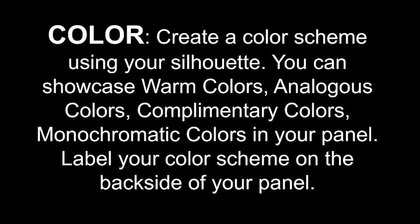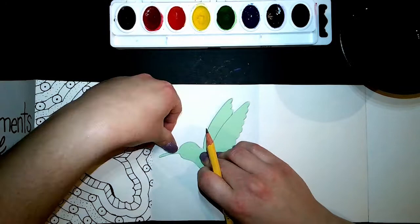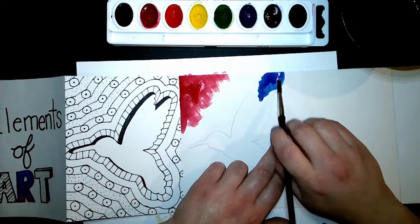The first thing you're going to do is trace your image that you made in the last video into the center of your panel. Now you're going to add color. I decided to use watercolors, but remember, it is your choice. I'm going to show you several different examples in this video.